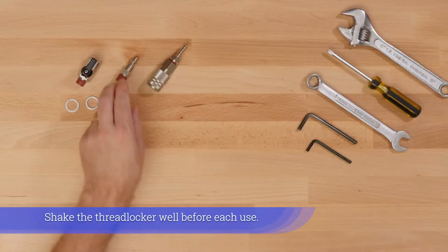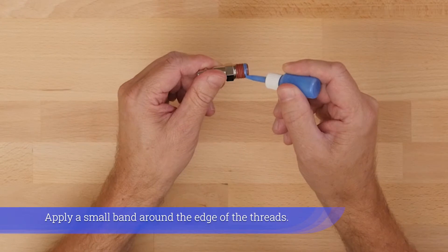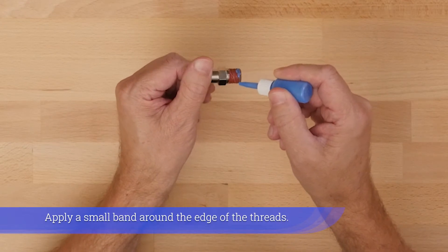Shake the thread locker well before each use. Apply a small band around the edge of the threads.